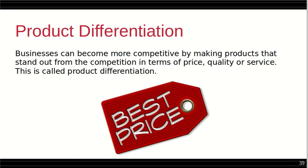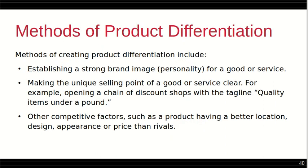Businesses can become more competitive by making products that stand out from the competition in terms of price, quality, or service — this is called product differentiation. Methods of creating product differentiation include establishing a stronger brand image for a good or service, and making the unique selling point of a good or service clear, for example opening a chain of discount shops with the tagline 'Quality items under a pound.' Other competitive factors include a product having a better location, design, appearance, or price than rivals.